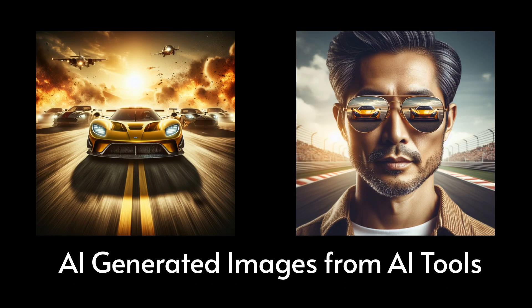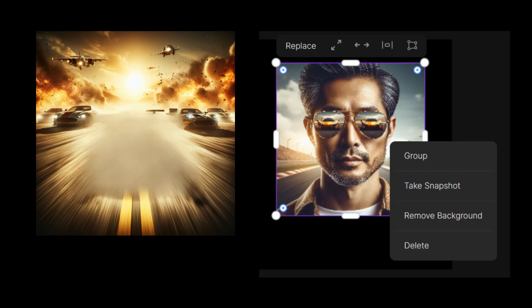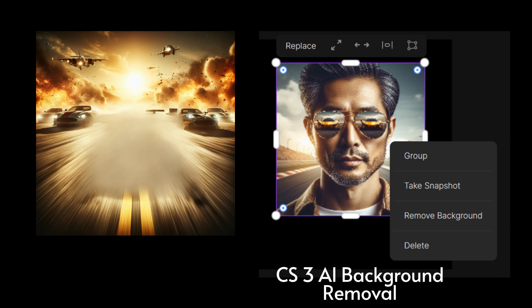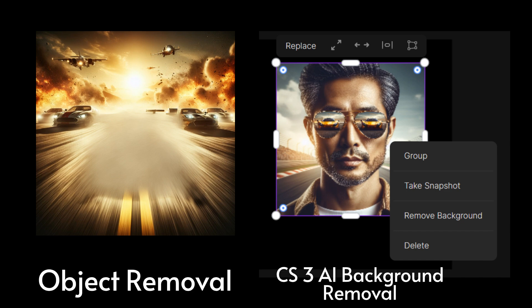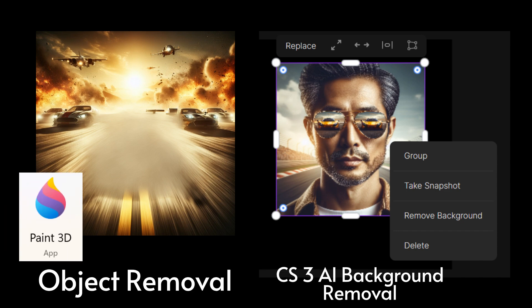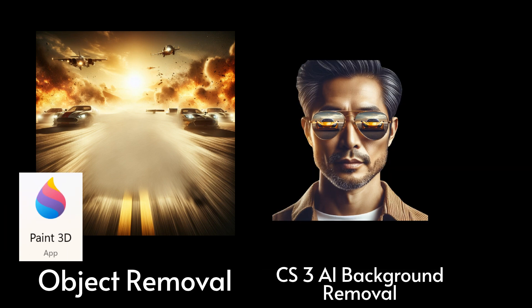In this video, I use only two AI-generated images. You can use any of the free AI tools like Bing Image Creator and others to create your own. I will do a background removal of the man using the tool inside CS3. For the object removal, I use the free Microsoft app, Paint 3D.